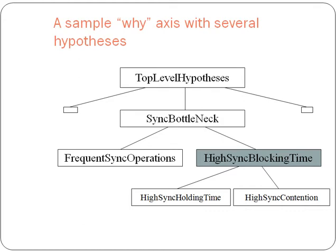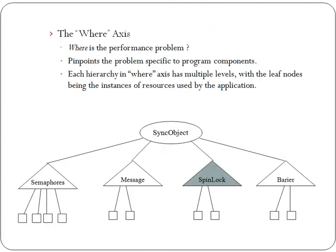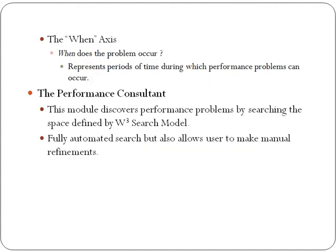A sample Y-axis with several hypotheses - top level of hypothesis, bottleneck, like bottleneck frequently and high seeking time. The where axis - samples like object, where is the source. The W-cube search model helps developers find performance problems by searching the space defined as W-cube. Such model is fully automated but also allows the user to make manual reference.